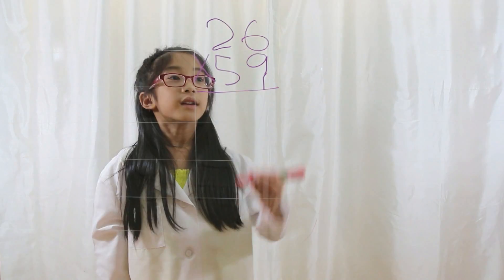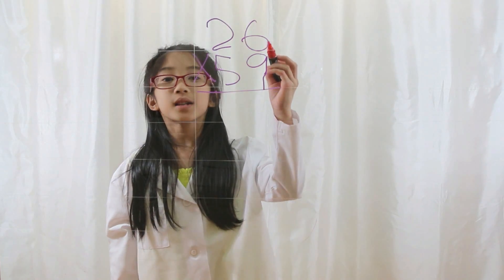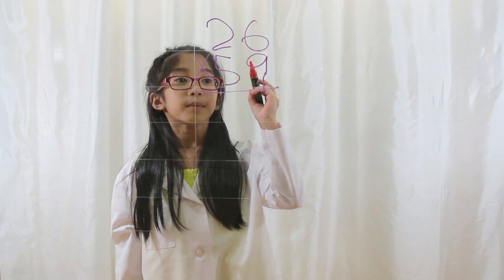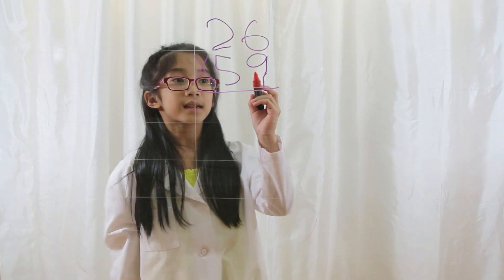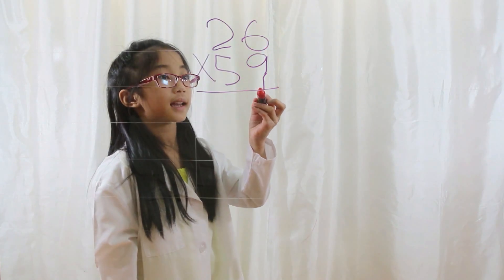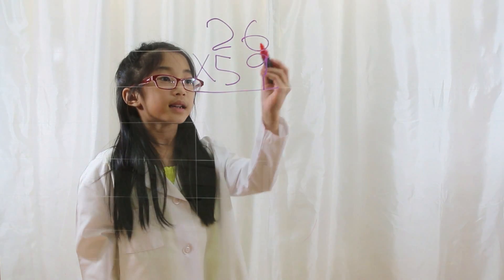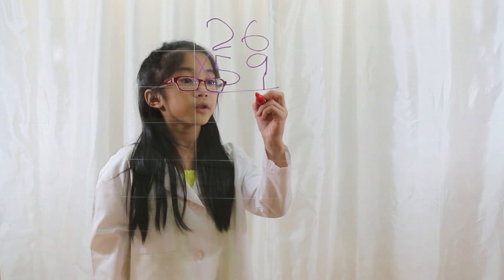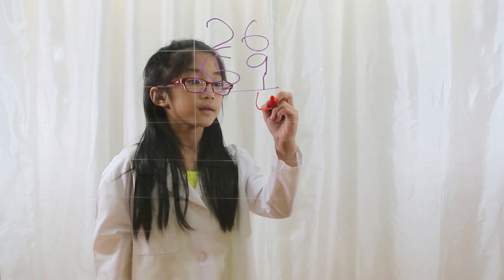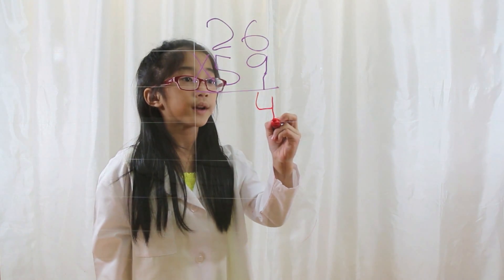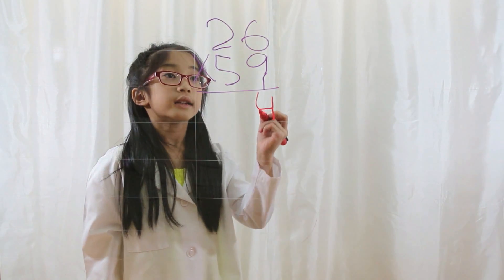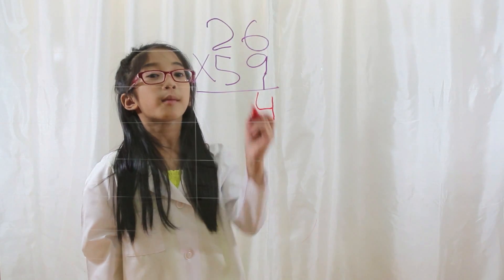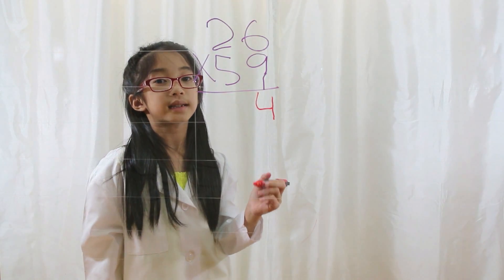Step 1. You take the ones digit of the first number and multiply it by the ones digit of the second number. 6 times 9 is 54. So you remember that there's a 4 at the end of your answer, and you have to remember that you carried a 5 above the 26.